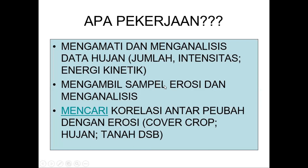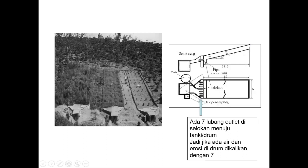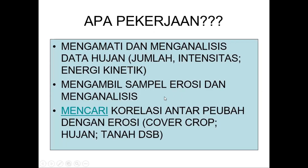Yang dikerjakan itu adalah mengamati dan menganalisis data hujan. Karena hujannya ini harus hujan otomatik, maka kita bisa menghitung jumlah intensitas dan energi kinetiknya. Kemudian mengambil sampel erosi dan menganalisis. Jadi, setiap pagi kalau terjadi hujan, kemarinnya itu ada erosi, maka ini kita ambil sampelnya. Sampel bisa kita ambil satu liter, kemudian kita ukur sedimennya dengan cara pertama disaring, kemudian secara kasar di-oven, sehingga kita tahu berat keringnya. Jadi, berapa erosinya, berapa jumlah yang ada di sini.